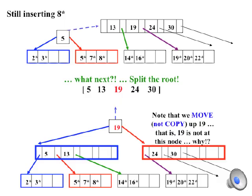19 is the middle value, so we use that value to move up. But note that rather than copying the 19 up and keeping a copy of 19 at the right node, in red, we have moved the 19 up. In general, when you split a leaf, as we had seen previously, we copied the middle value up. In contrast, when we split an internal node, any internal node, including the root, we move the middle key up. Why is that?